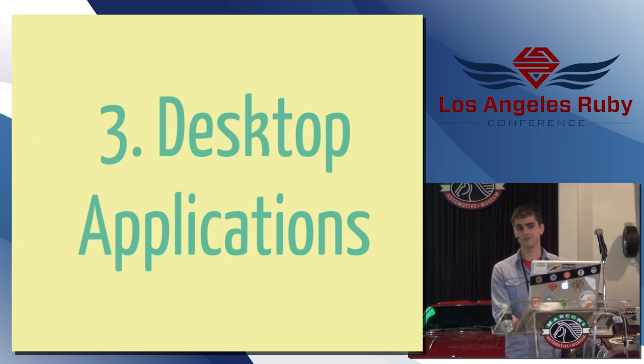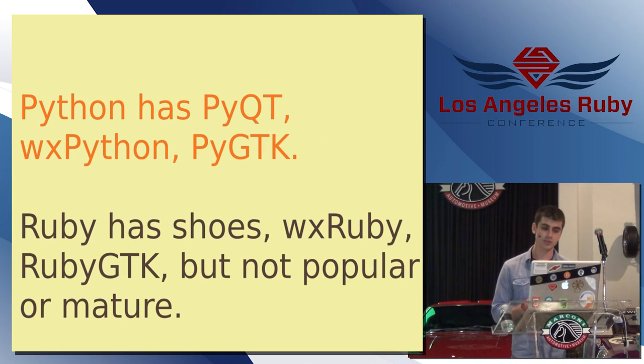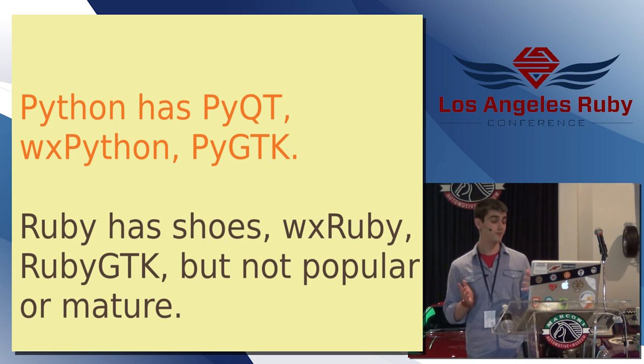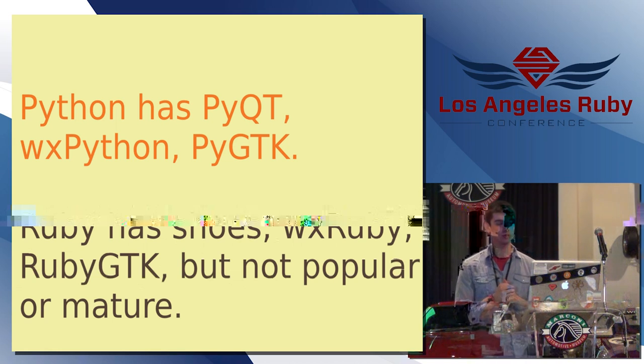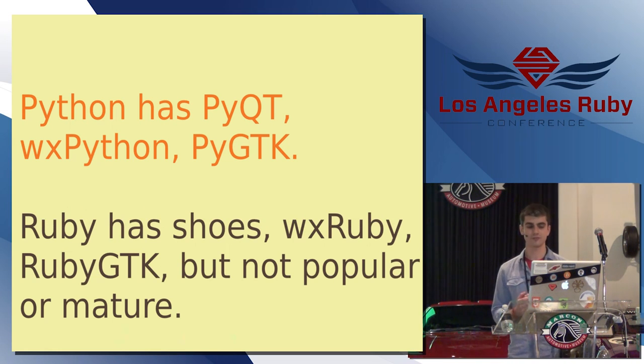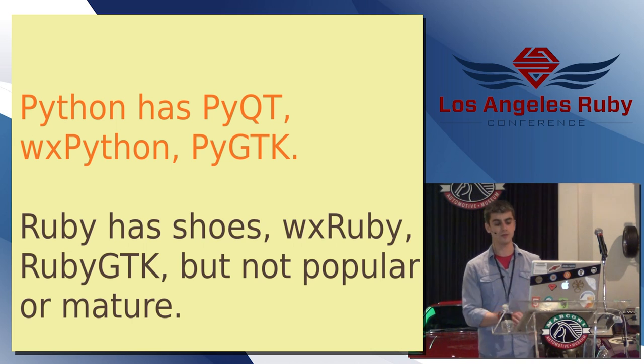Let's talk about desktop applications, if anyone still builds those. Python has like QT bindings, GTK bindings, WX Widgets bindings. Ruby also has those and also has things like shoes, but none of the Ruby libraries are really widely used or mature. I was actually doing a little research for this talk and I was Googling some Python projects that use some of these libraries, and there was a lot. I was really impressed. There was just much more activity going on than I had expected.